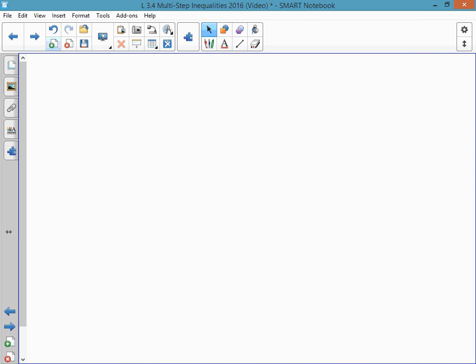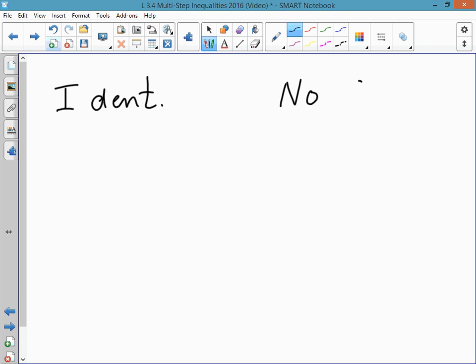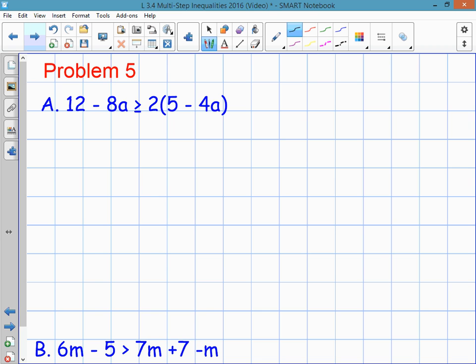Now, when we solved equations, there were two special cases. One was called the identity. And one was no solution. And if you recall, both of these happened when all the variables canceled out. And the identity happened when you got a true equation like 4 equals 4. And no solution happened when you got a false equation like 3 equals 4. And something similar happens with inequalities. So let me show you a couple of those.